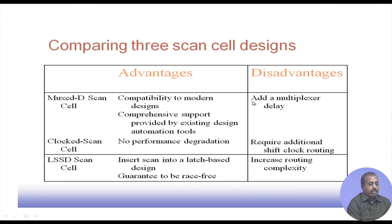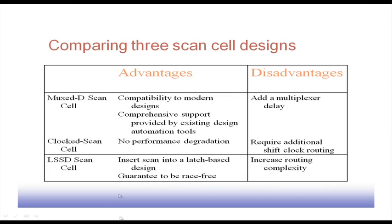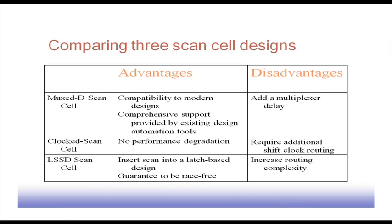Comparing the designs: the Muxed-D scan cell is compatible with modern design, but its disadvantage is that it adds one multiplexer delay — before the flip-flop we have a multiplexer, so that multiplexer delay comes into picture. They do provide comprehensive support by existing design automation tools, as this process is very much automated — CAD tools can do scan chain insertion automatically, finding all flip-flops and modifying them to scan flip-flops with proper stitching. The clocked scan cell's advantage is that there is no performance degradation, since there is no multiplexer before the flip-flop — even if that flip-flop is on the critical path, the delay is not increased and system performance is not sacrificed.